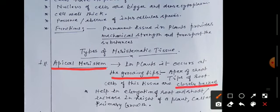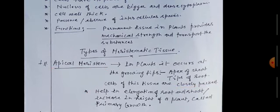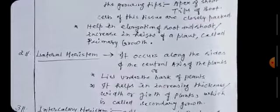This tissue in plant is involved in elongation of root and shoot means it is for increasing the height of a plant which is known as the primary growth. So apical meristem is involved in causing primary growth in plant.